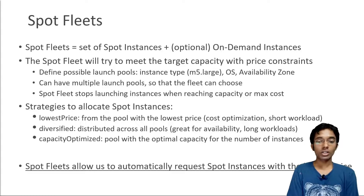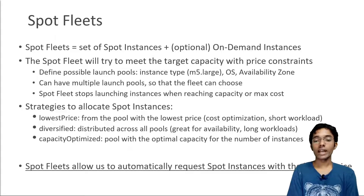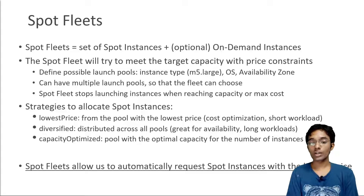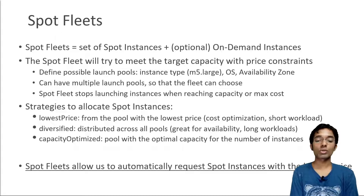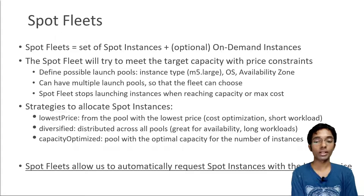You define a strategy to allocate spot instances in your spot fleet. The first strategy is lowest price — the spot fleet launches instances from the pool with the lowest price, which gives a lot of cost optimization and is great for short workloads. You can also use a diversified strategy, where spot instances are distributed across all defined pools, which is great for availability and long workloads because if one pool goes away the others remain active.